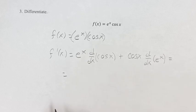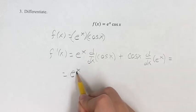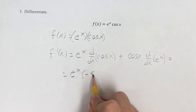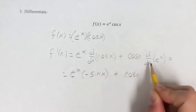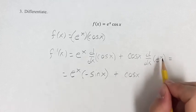So now we just have to solve these inner derivatives. We have e to the x times the derivative of cosine x is negative sine x, plus cosine x times the derivative of e to the x is just itself, e to the x.